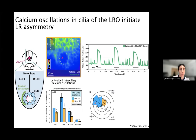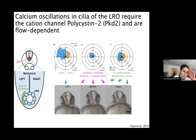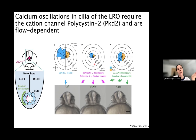We demonstrated using calcium buffers that those intracellular calcium oscillations were critical for proper left-right development — blocking them causes loss of proper lateralization. We also showed those intracellular calcium oscillations rely on the cation channel polycystin-2 (PKD2): blocking the channel using a morpholino or in a PKD2 mutant causes loss of those oscillations, leading to complete randomization of heart position. Additionally, those oscillations rely on proper flow — paralyzing ciliary motility causes loss of left-sidedness of the oscillations and leads to complete randomization of organ situs.